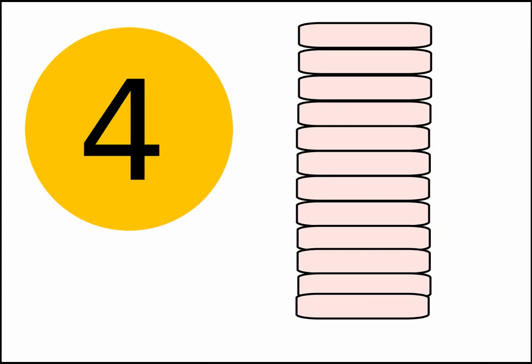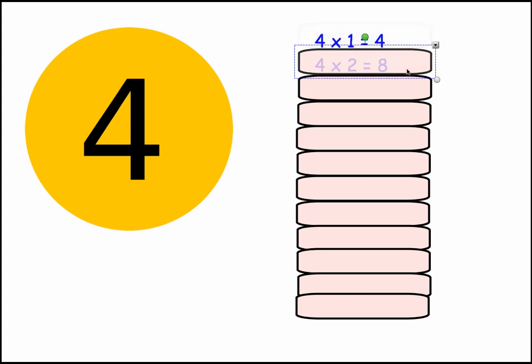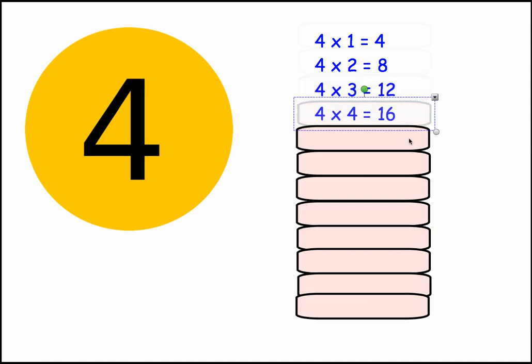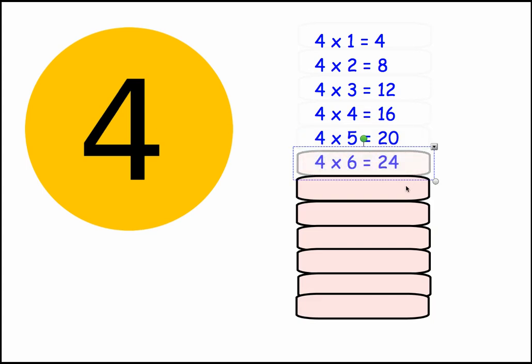In this video we're going to look at the 4 times tables. 4 times 1 equals 4, 4 times 2 equals 8, 4 times 3 equals 12, 4 times 4 equals 16, 4 times 5 equals 20, 4 times 6 equals 24.